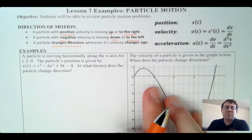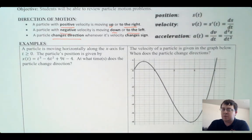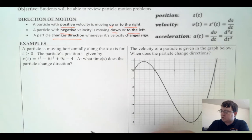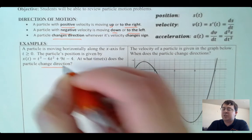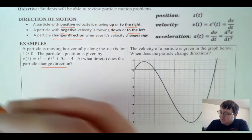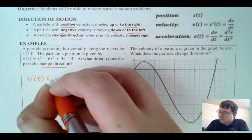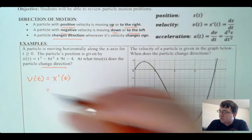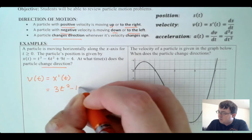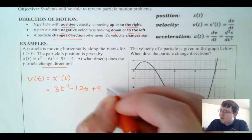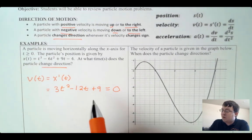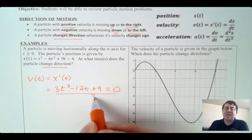Let's look at this example. A particle moves horizontally along the x-axis for t greater than zero, and its position is given by x(t) = t³ − 6t² + 9t − 4. To find when the particle changes direction, I need velocity, which is x′(t) — the derivative of the position function. Taking the derivative of this polynomial gives v(t) = 3t² − 12t + 9. I want to find where that equals zero because the particle must stop to change direction.